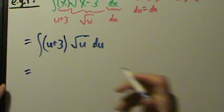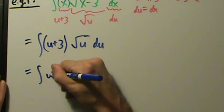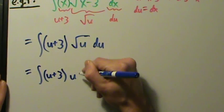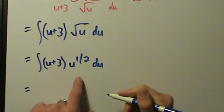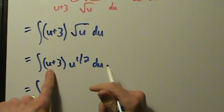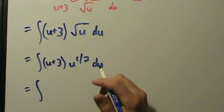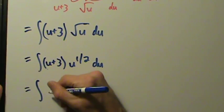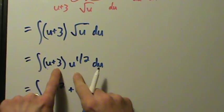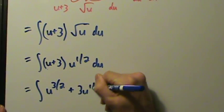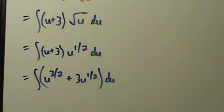Let's write everything with fractional exponents. So this is going to be u plus 3 times u to the 1/2, du — so we're integrating that. Let's distribute: u times u to the 1/2 is u to the first power, which is 2 halves, so u to the 2/2 times u to the 1/2 is u to the 3/2. And then plus 3 times u to the 1/2. The du is on everything.